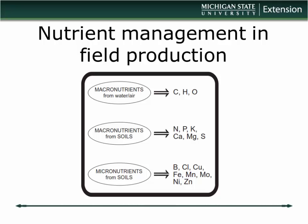When we talk about essential elements, we immediately throw carbon, hydrogen, and oxygen out of the equation because plants get those from air and water. So mineral elements are everything else. Macronutrients — sometimes N, P, and K are called primary nutrients, while calcium, magnesium, and sulfur are called secondary elements. They're still macros needed in large amounts, but we don't worry about them as much. Everything below gets lumped in as micronutrients.